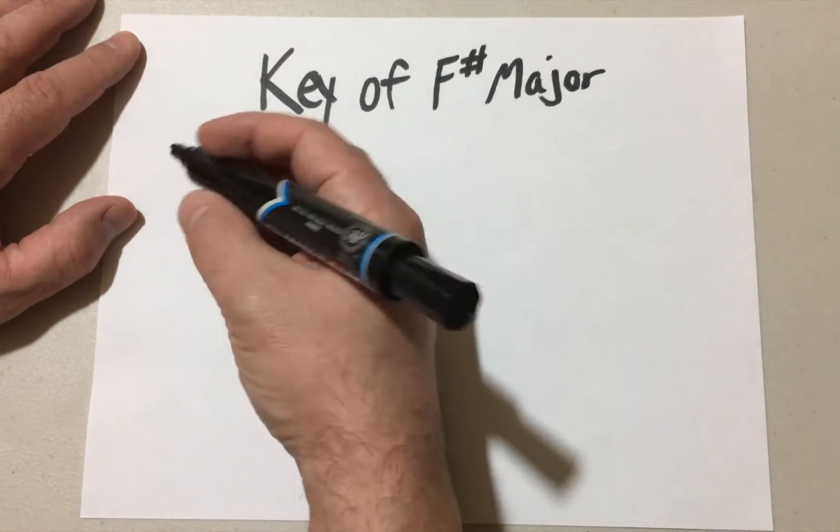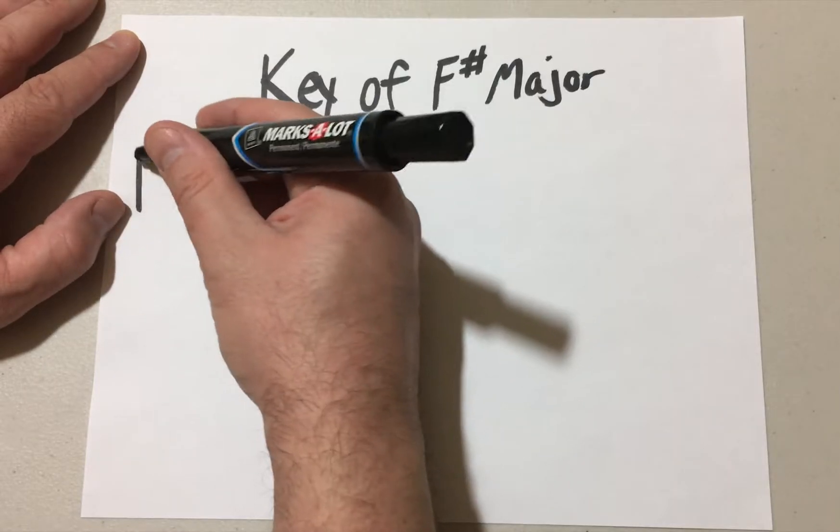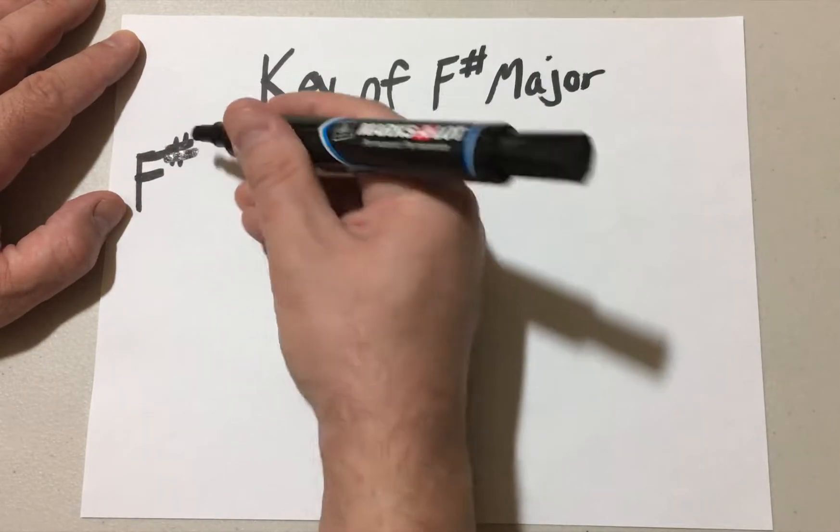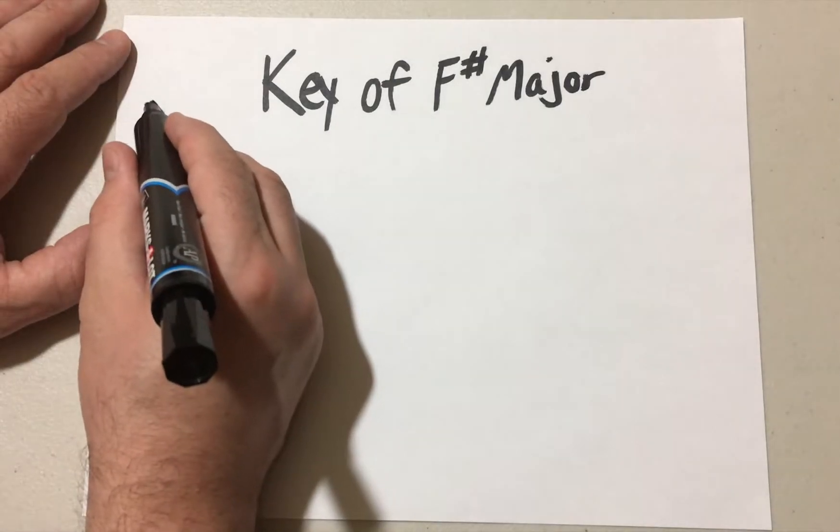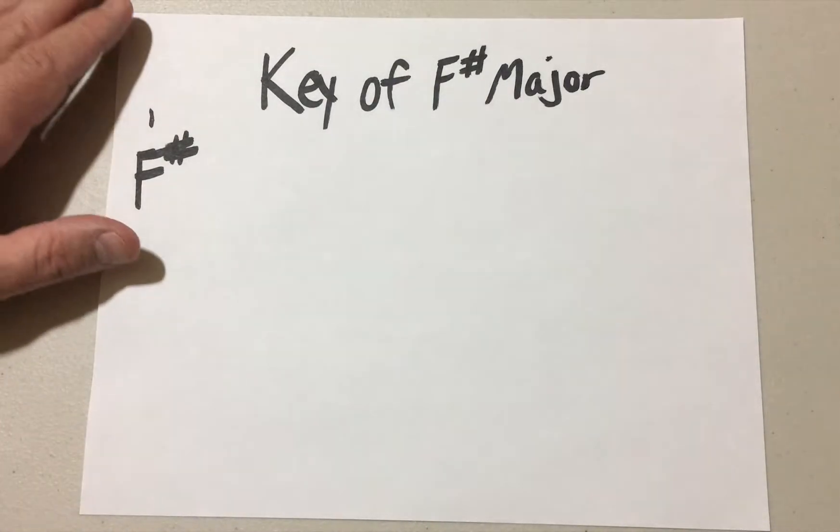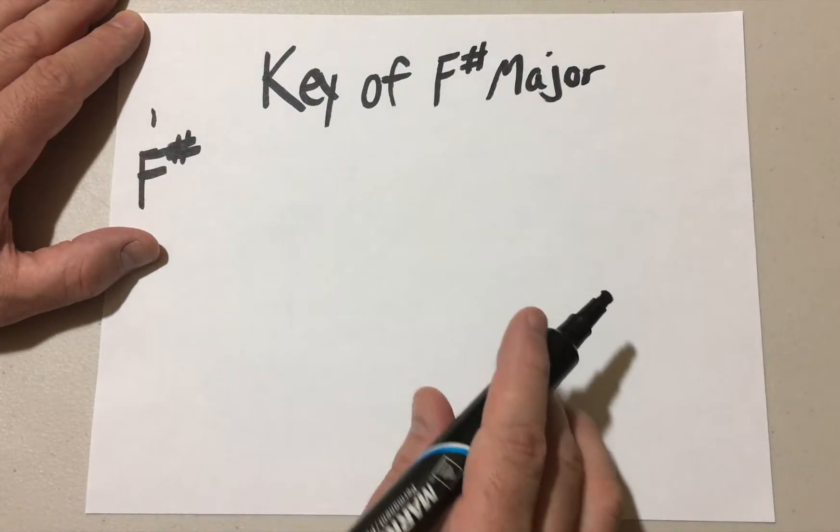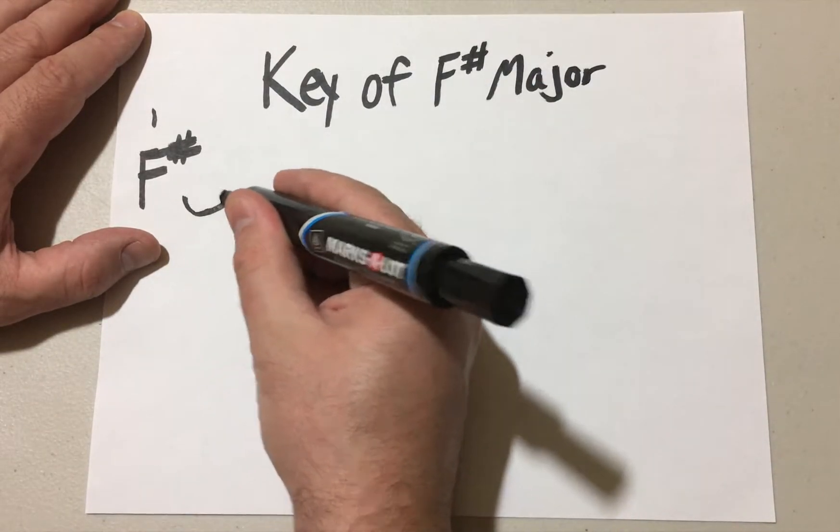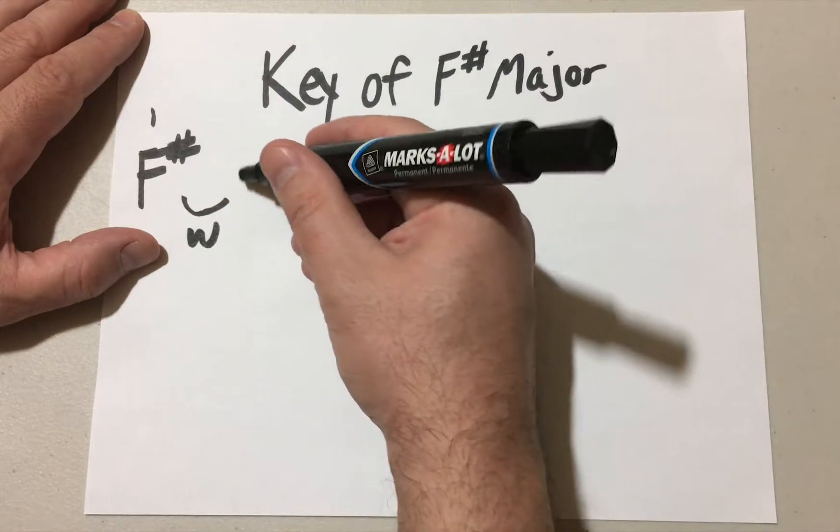But we're gonna go through the basic system of finding all the notes. So of course the first note of the major scale is going to be the root note. If we're in F sharp major, it's F sharp.